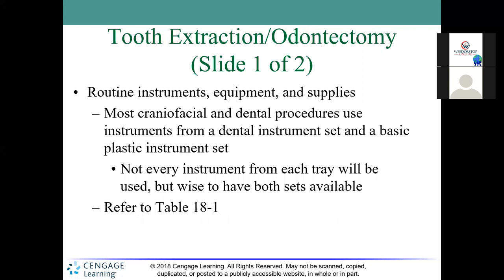Routine instruments and equipment for oral surgery can be found on page 703 as a dental and plastic instrument set. These include the mouth prop, Yankauer, number seven knife handle, and needle holder. Items that may be new to you include the McGill, the optional forceps, and the Minnesota retractor. The Minnesota mouth prop and plastic cheek retractor are also used. Not every instrument from each set will be used — some hospitals reduce the number while others keep all instruments because surgeons can't agree on a standard.